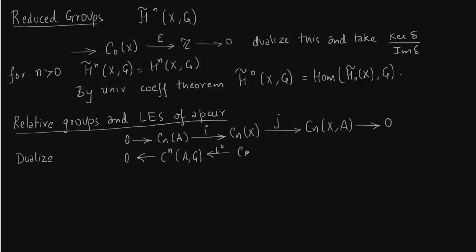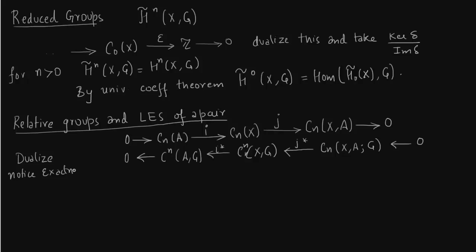Now we have obtained a co-chain complex of the pair. As we have seen before, given a chain complex the natural thing to do is to derive a long exact sequence from it. This co-chain complex gives us the long exact sequence of cohomology groups.